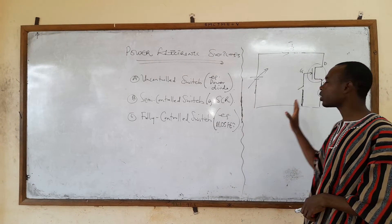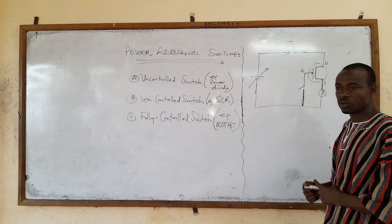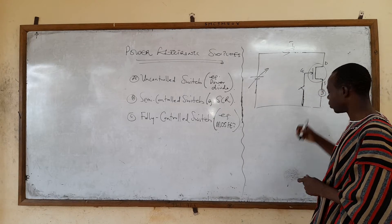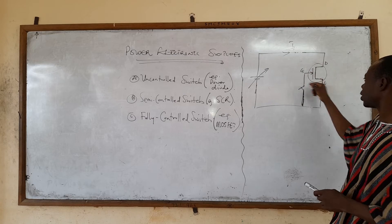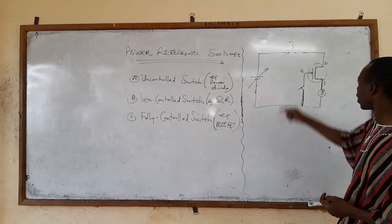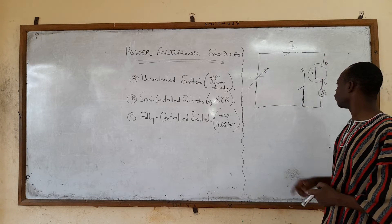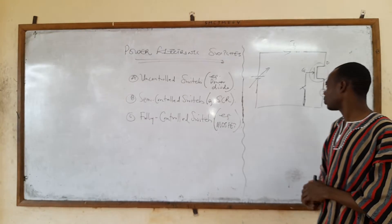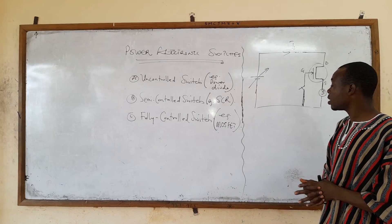This power electronic switch will remain in the off mode. What we can do is give it a gate voltage. When we apply a gate voltage, this switch will turn on, and when it turns on it will allow current to flow in the circuit for this lamp to consume the electrical energy.